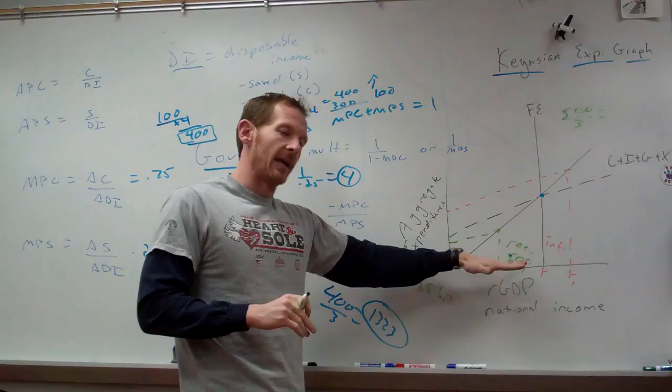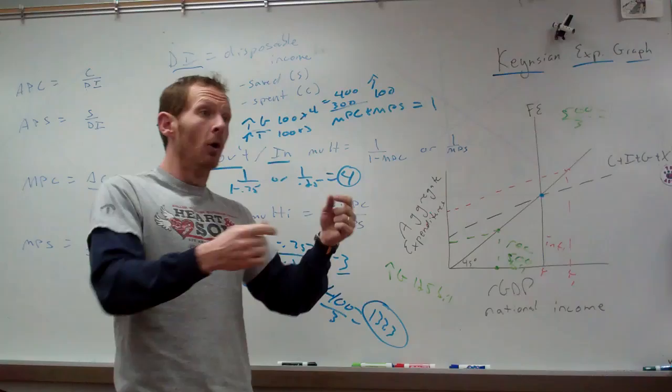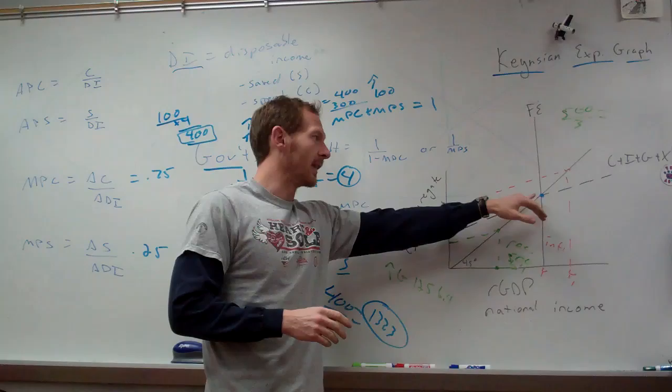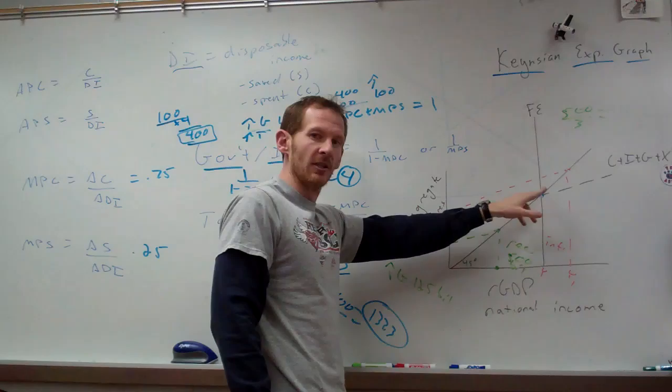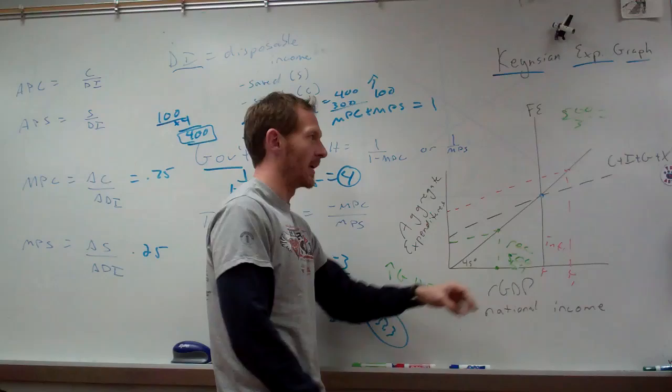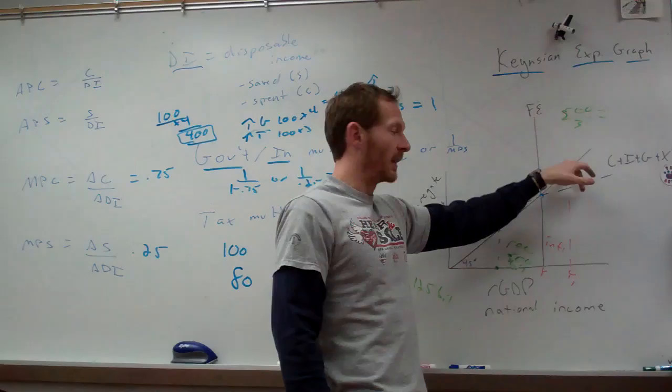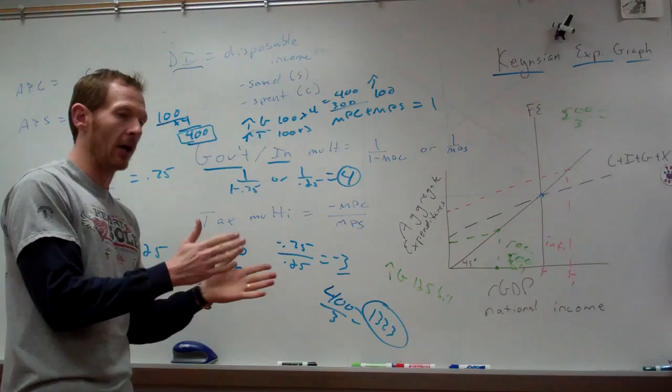Those are what we can use our multipliers for, and we have the Keynes graph for this. You're not going to see the Keynes graph a lot on the AP exam, but you will see questions regarding the expenditures model. It's important to know the 45-degree line is where the two axes meet, and where full employment hits the 45-degree line is our full employment equilibrium output. Anything that hits the 45-degree line before that means we're in recession; after means we're in an inflationary gap. You can use multipliers to close the recession gap or bring the economy down from an inflationary period.